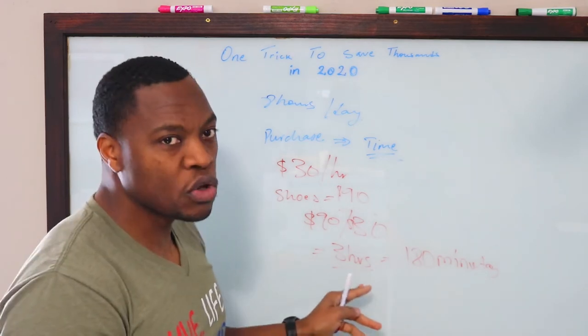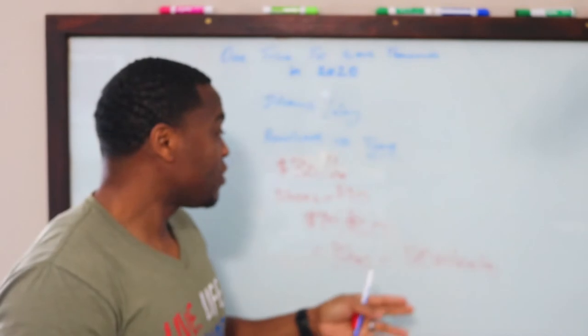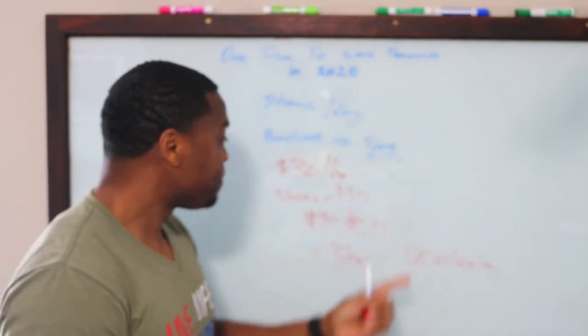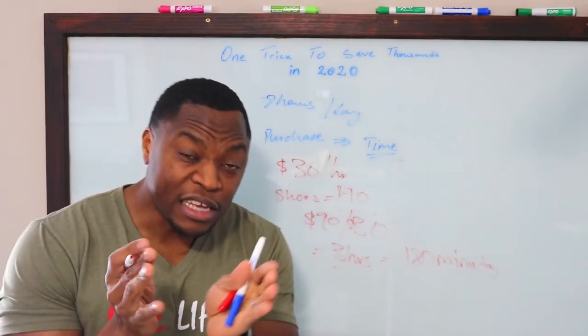If it's just buying tickets to go to, maybe a concert, you say, okay, those tickets are $200 or $300. So, you take that, you divide it by your $30 an hour. That's going to tell you,